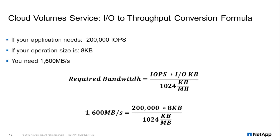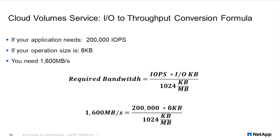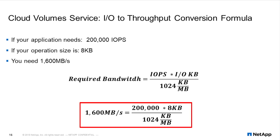When discussing random workloads we speak in terms of IOPs, but quotas and service levels are considered in terms of bandwidth consumption — megabytes per second. Consider an Oracle database: a general tablespace uses 8K I/O sizes. To convert IOPs to megabytes per second: required bandwidth equals IOPs times I/O size. So 200,000 IOPs at 8K, divided by 1024 kilobytes per megabyte, equals 1,600 megabytes per second.